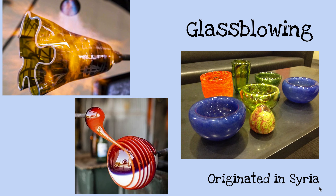And glassblowing — this one's kind of cool. This originated in Syria. Glassblowing is a way to make glass, and they do lots of different things. As you can see, they made bowls and cups. They can also make random swirl shapes, which is kind of cool. The glass can be moved when it's really hot — it's not hard like glass until it cools.